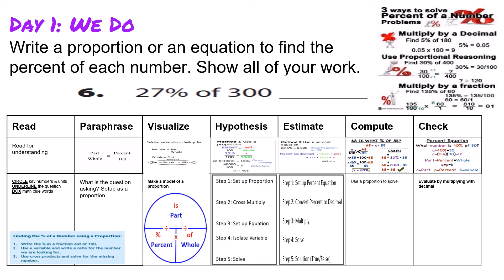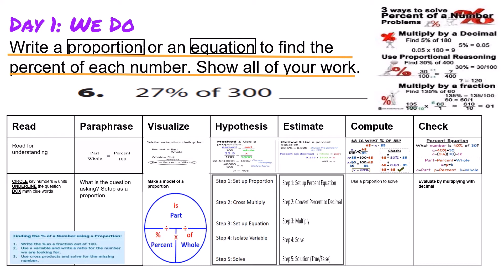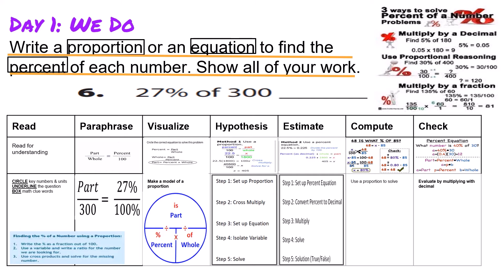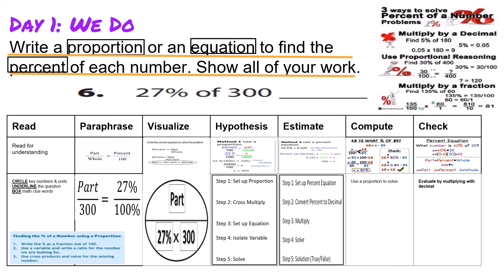Now let's write a proportion or an equation to find the percent of each number — show all your work. Let's annotate: underline the question, box in proportion, equation, and percent. Now let's set up a proportion. We would end up with part over 300 equals 27 percent over 100 percent. Plugging this into our model shows we can simply multiply 27 percent by 300.